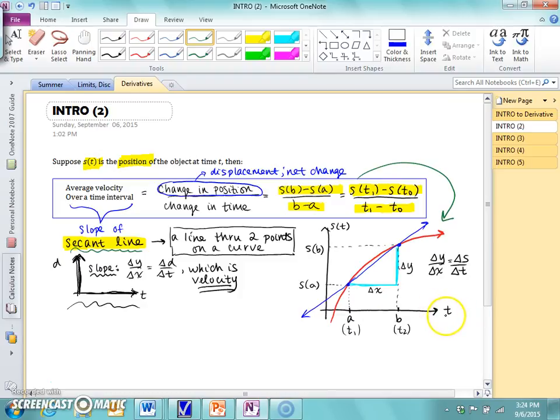So on this coordinate plane, I have t versus s of t, which is position. I'm going to let my first x value be a, my second one be b. You could also call it, oh, I should call this t0 and t1. Sorry.